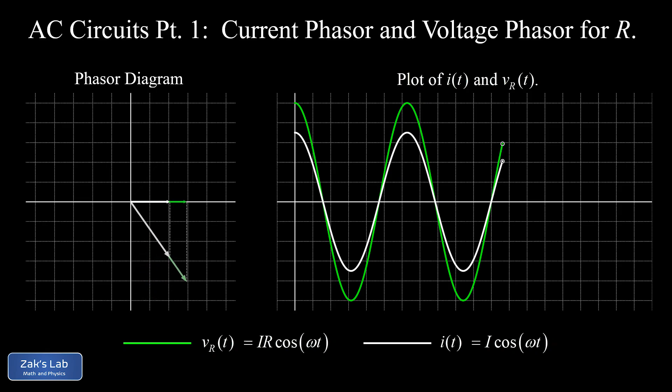You can find links to all the videos in the series down there in the description. So what we've been looking at in this intro animation is a preview of the phasor representation of the current and voltage in a simple one resistor AC circuit.